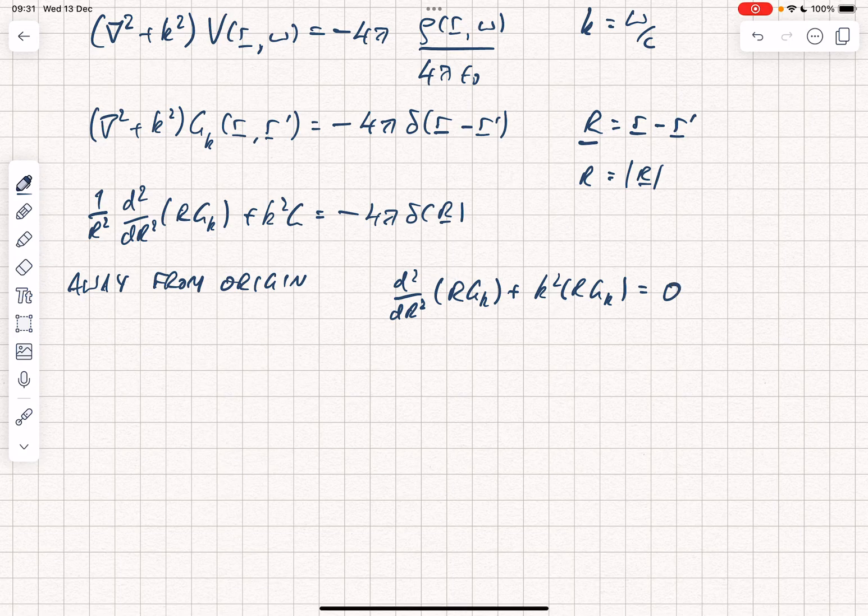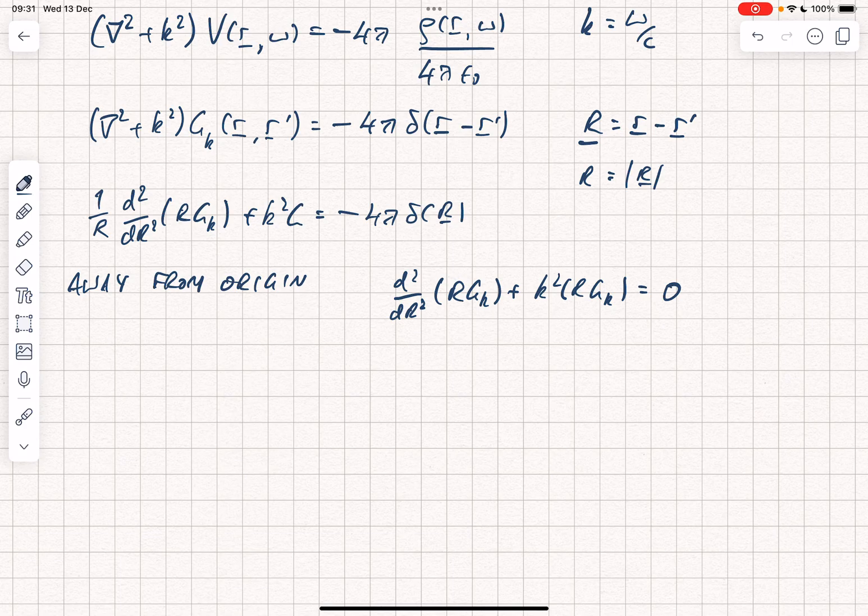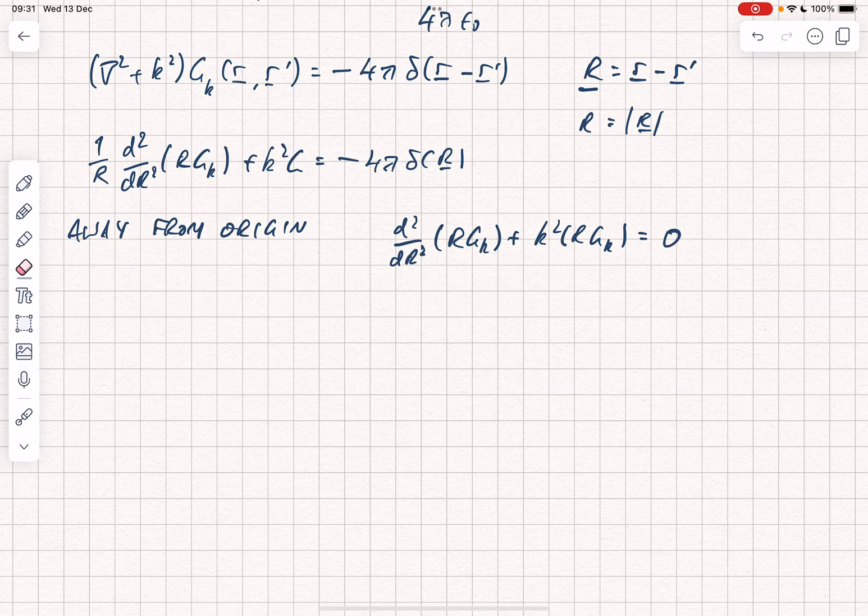You'll see that we've multiplied through by r. I've just noticed that that should not be an r squared, that should be an r over there. We've multiplied through the equation by r, and because we're away from the origin, the source term goes to 0. The solution is r gk equals a e to the i kr plus b e to the minus i kr.